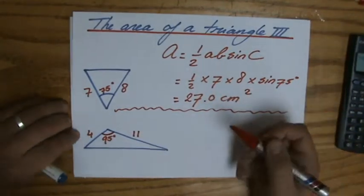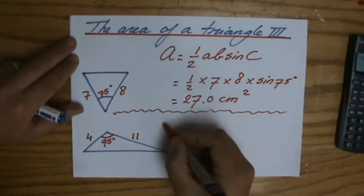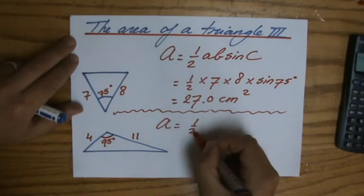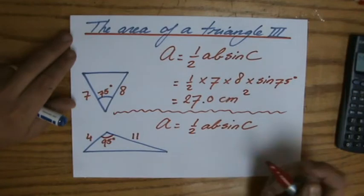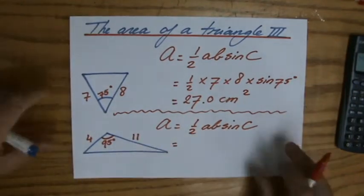All right, next question. Also, the area of any triangle: half times A times B times the sine of C. Just write that down, it shows you know what you're doing.